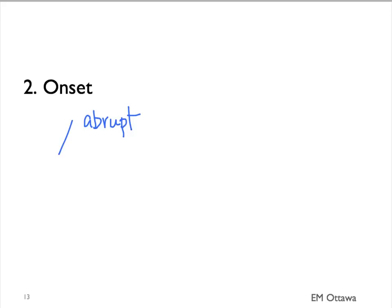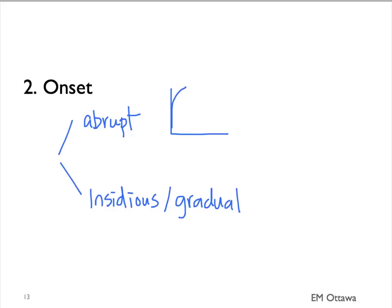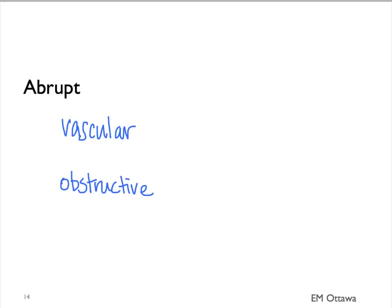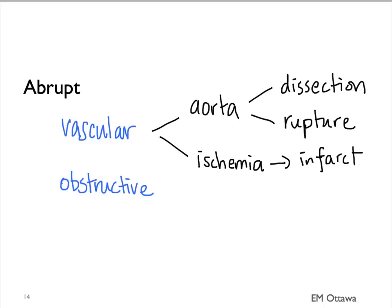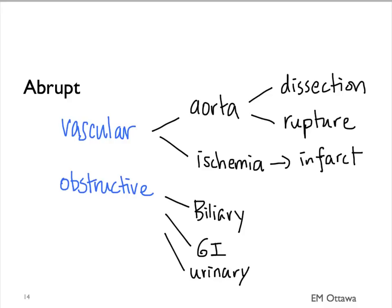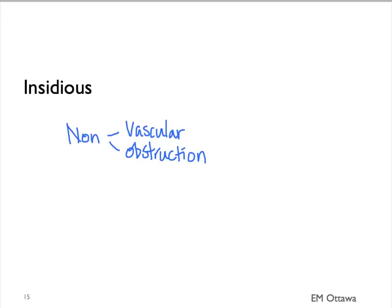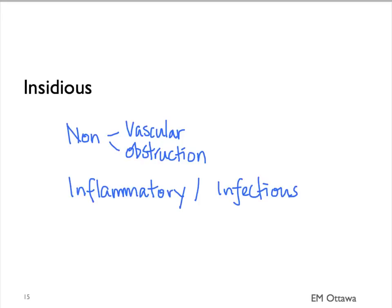We can also approach the pain by how it started. It can be an abrupt onset where the pain peaked instantaneously, or gradual, when the pain builds slowly over time. Disorders that give patients abrupt pain suggest vascular or obstructive causes. For vascular, we want to think about aortic disorders or ischemia leading to infarcts. Obstruction can be in the biliary tree leading to biliary colic, in the GI tract, or in the urinary tract in the case of renal colic. Non-vascular, non-obstructive causes of pain tend to give an insidious picture, such as inflammatory or infectious conditions where the pain slowly builds over time.